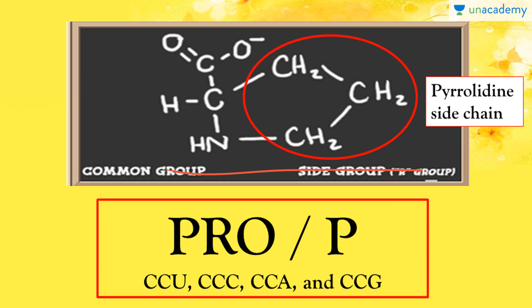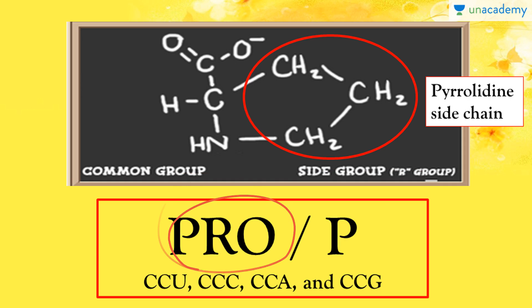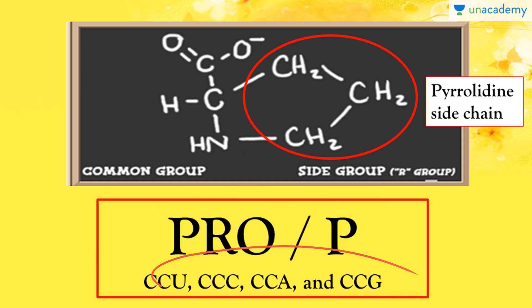Talking about the abbreviated form, proline is abbreviated as PRO, the single letter code is P, and these are all the codons which code for proline.